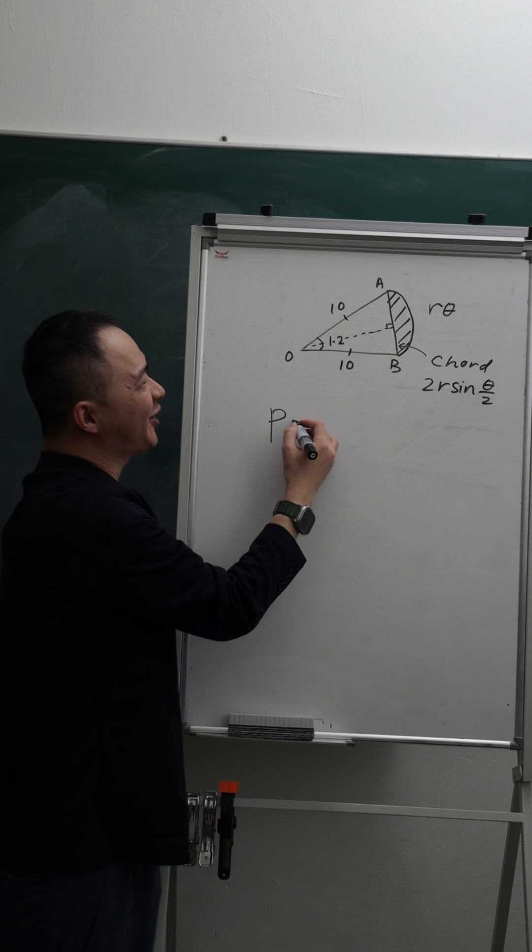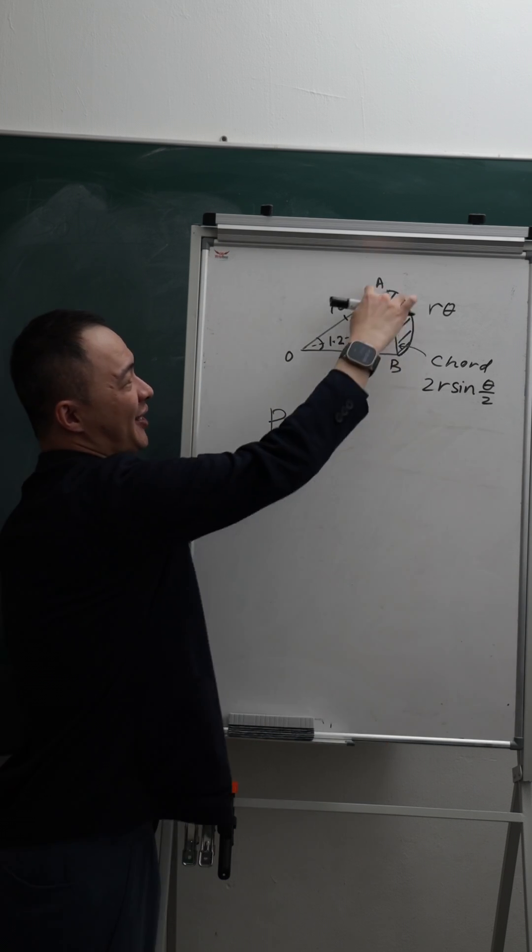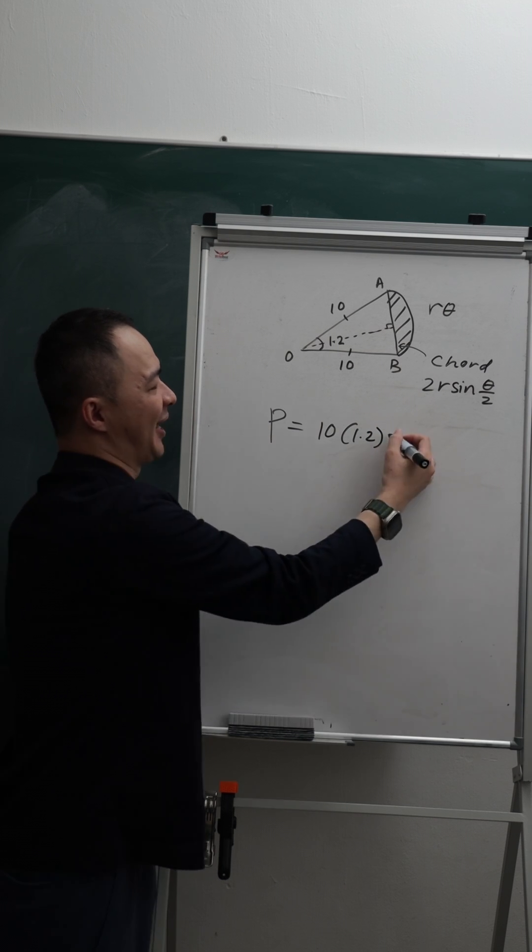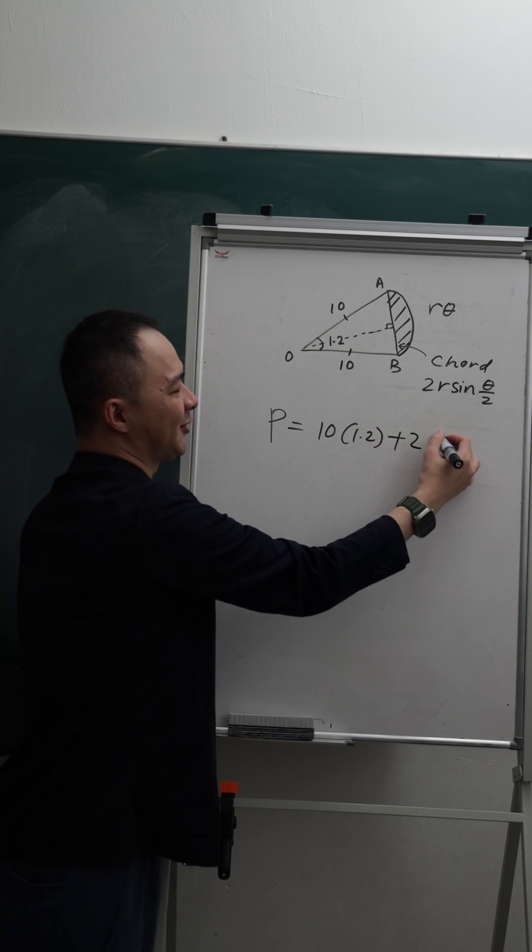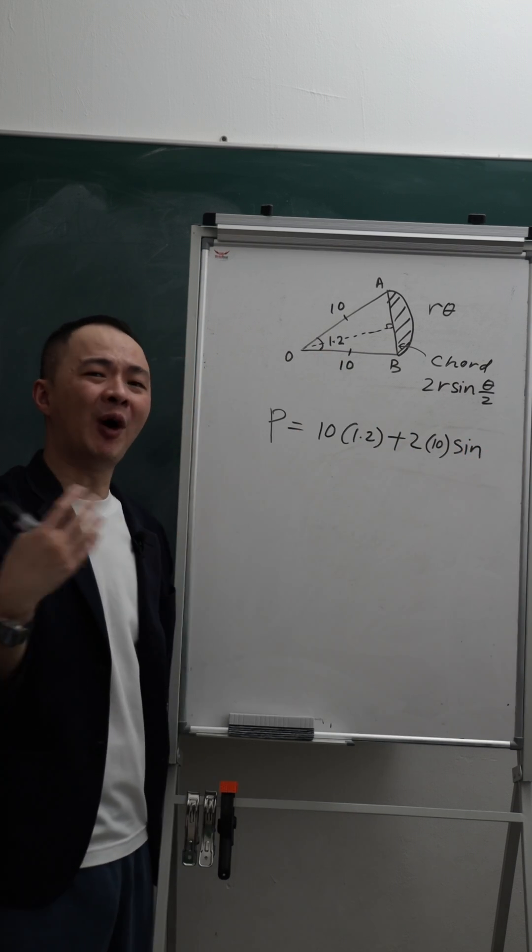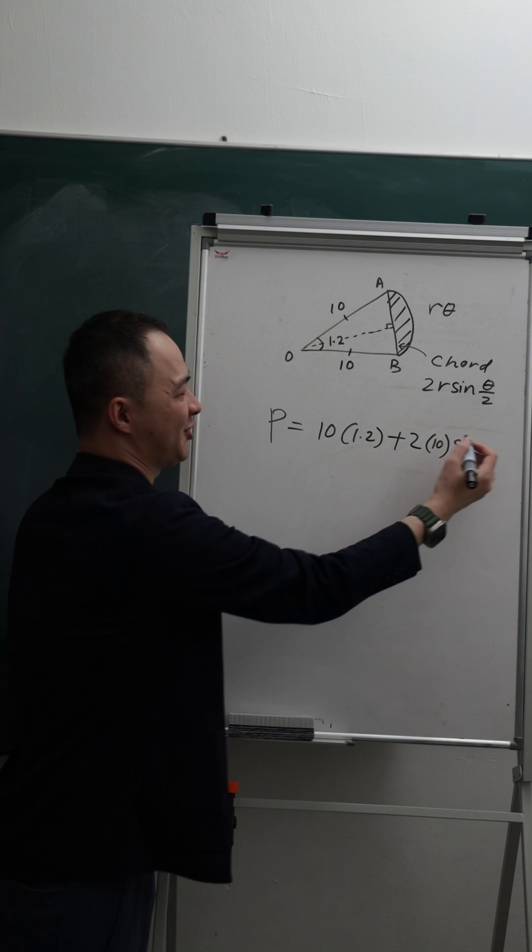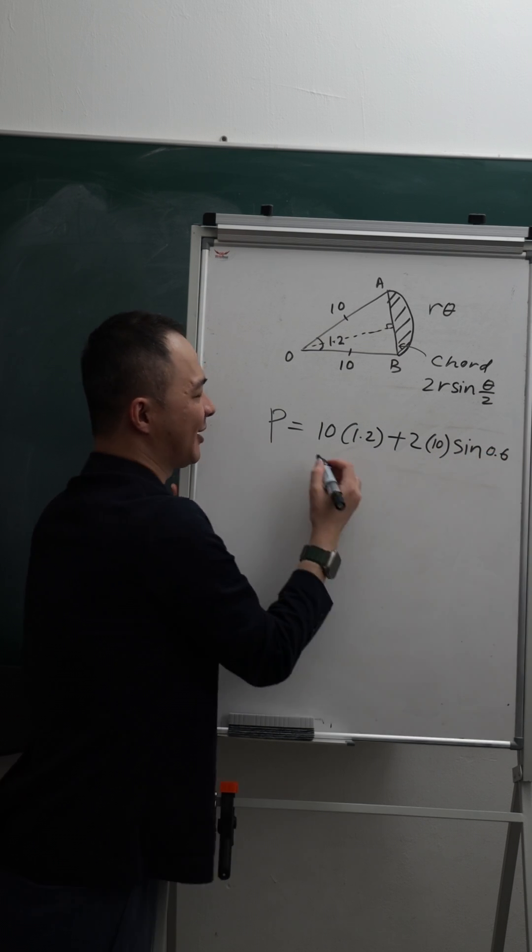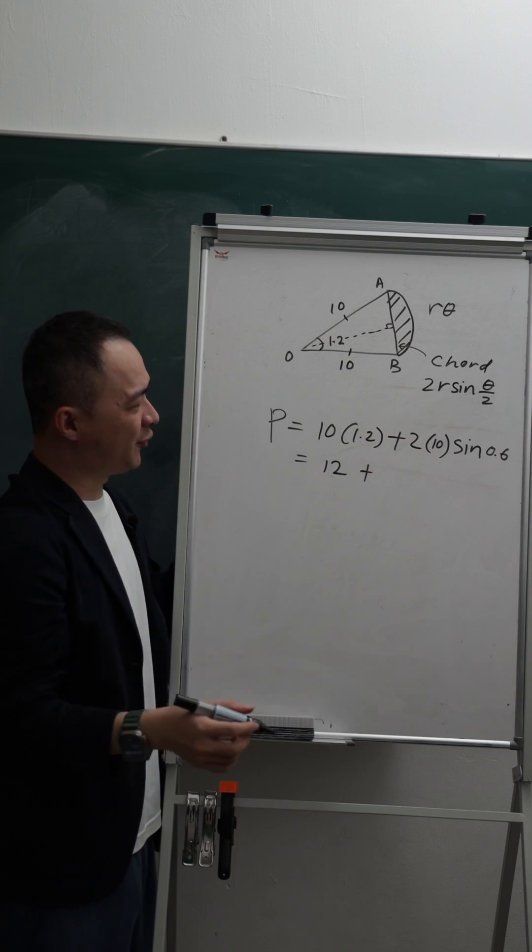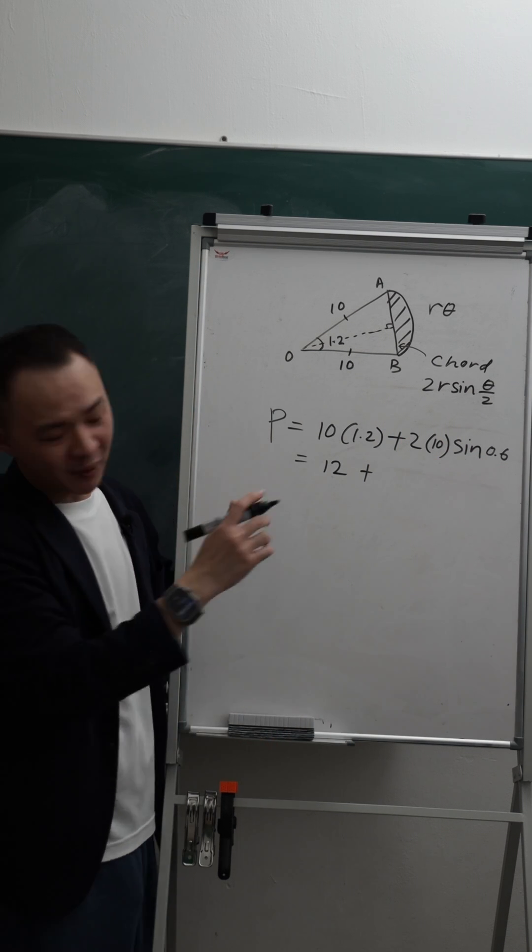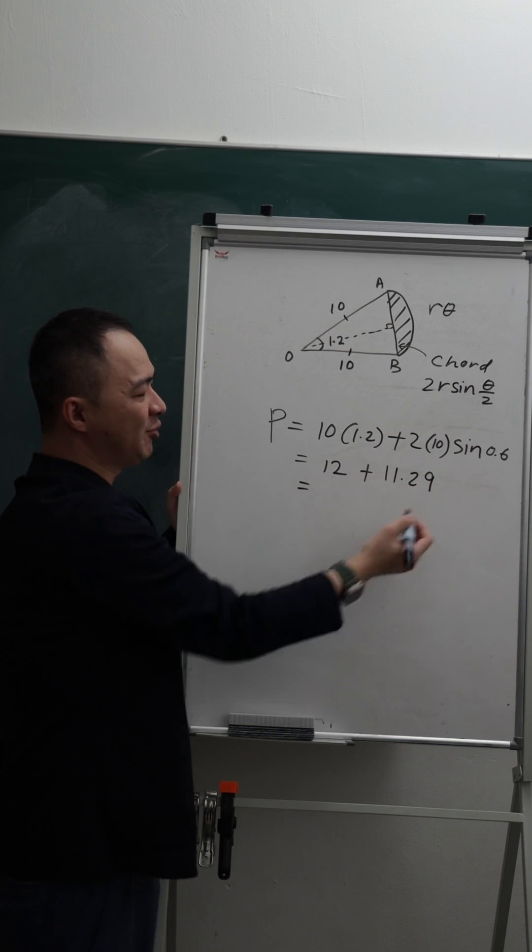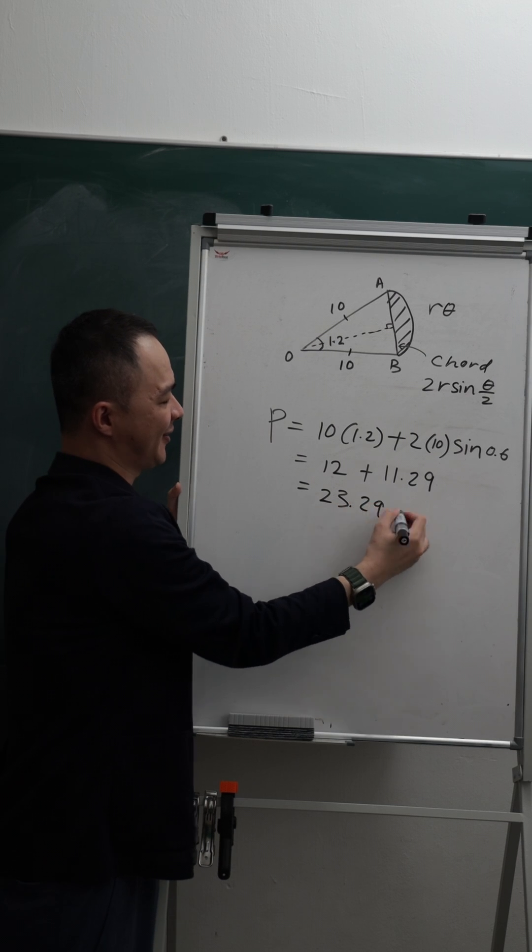So if I want to find the perimeter of the whole thing, I will say R theta is 10, theta is 1.2 radians, plus 2R, that's 10, and then sine theta over 2, imagine 1.2 divided by 2, you get 0.6 radians. Then here will give you 12 plus, I believe this one will give you the number 11.29. Then you just add them together, you will get 23.29 centimeters.